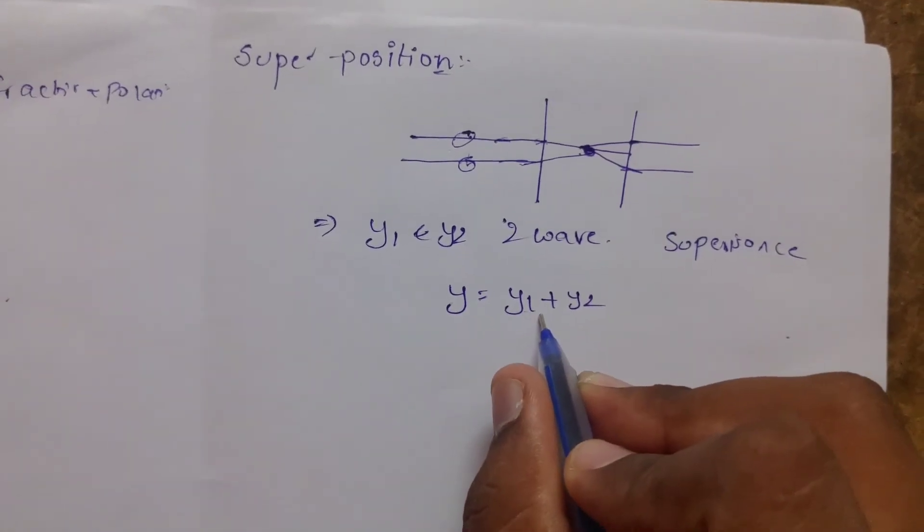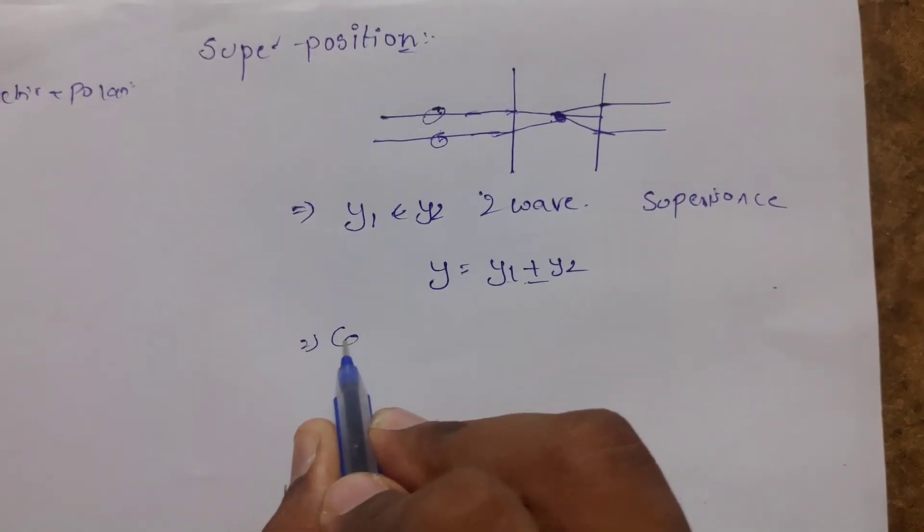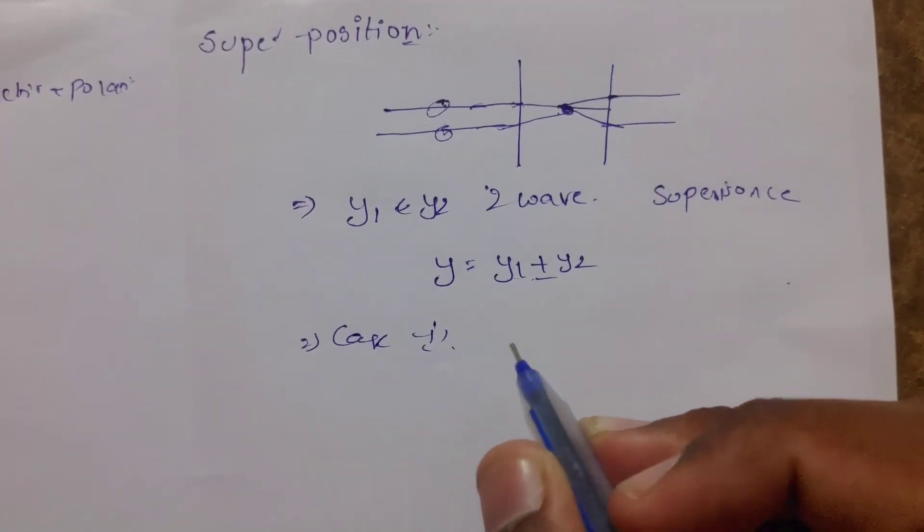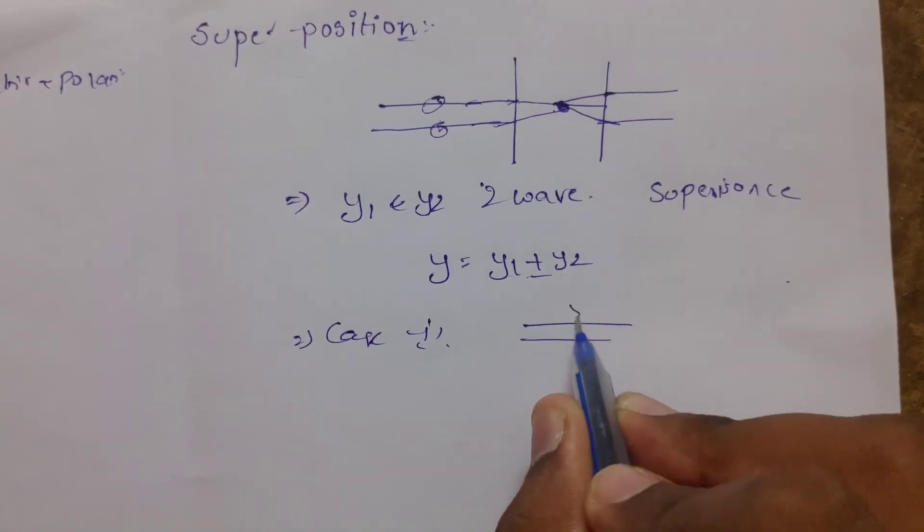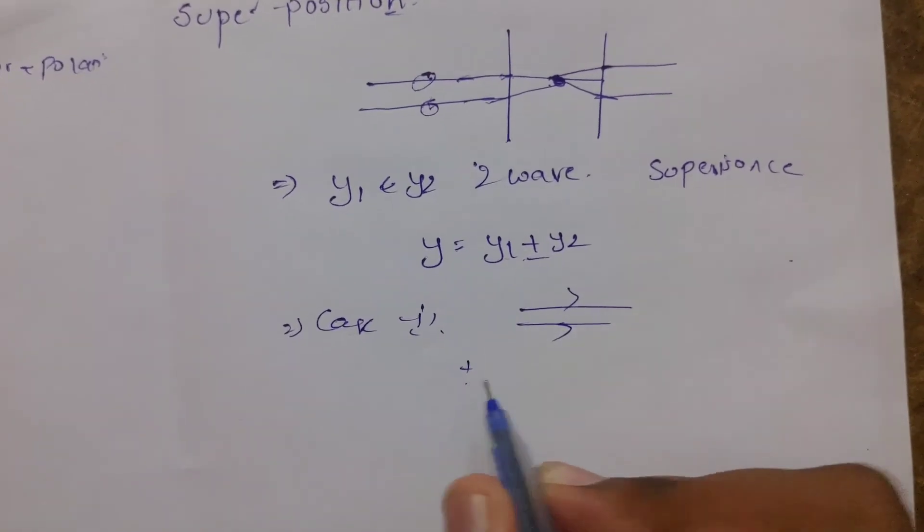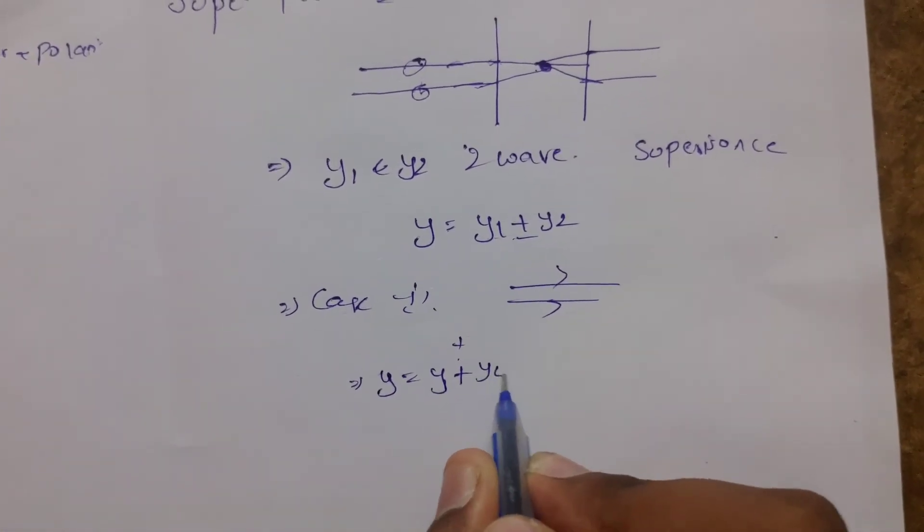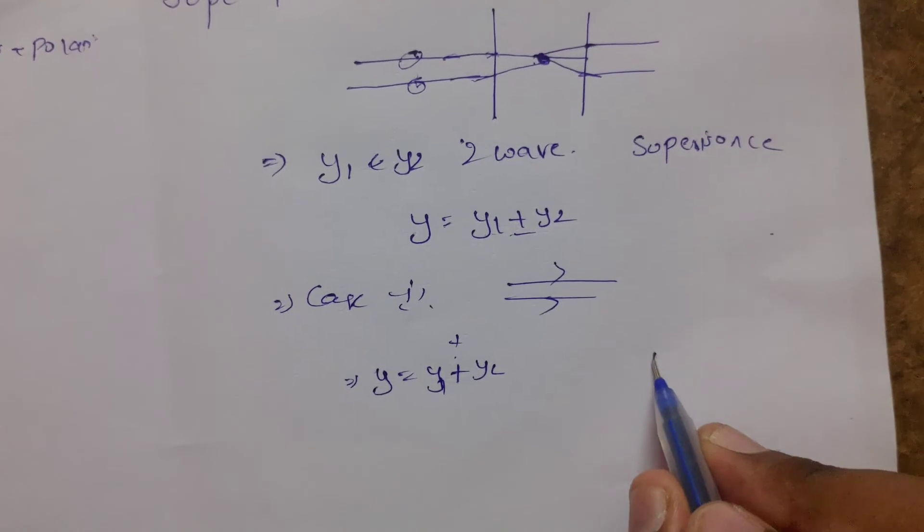y equals y1 plus or minus y2. There are two cases. First case: when two waves travel in the same direction, the resultant magnitude is y equals y1 plus y2.